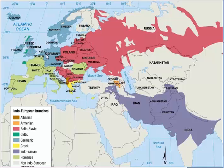We see that the West Germanic branch covers the northern part of Europe — the UK, Ireland, Norway, Sweden, and Denmark. Then look at the Baltic Slavic — look how far east it goes across the Eurasian continent, all the way over to East Russia. And then a similar thing with the Indo-Iranian — look how far east it goes, all the way over to Bangladesh. So it's a tremendous distance.